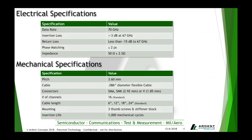The electrical specifications: we go up to 70 GHz. Insertion loss is great at -3 dB for 67 GHz, and return loss is below the -10 dB benchmark at about -15 dB to 67 GHz, which we are very impressed with. Our standard phase matching is 2 picoseconds, and impedance, as always, is 50 ohms plus or minus 2.